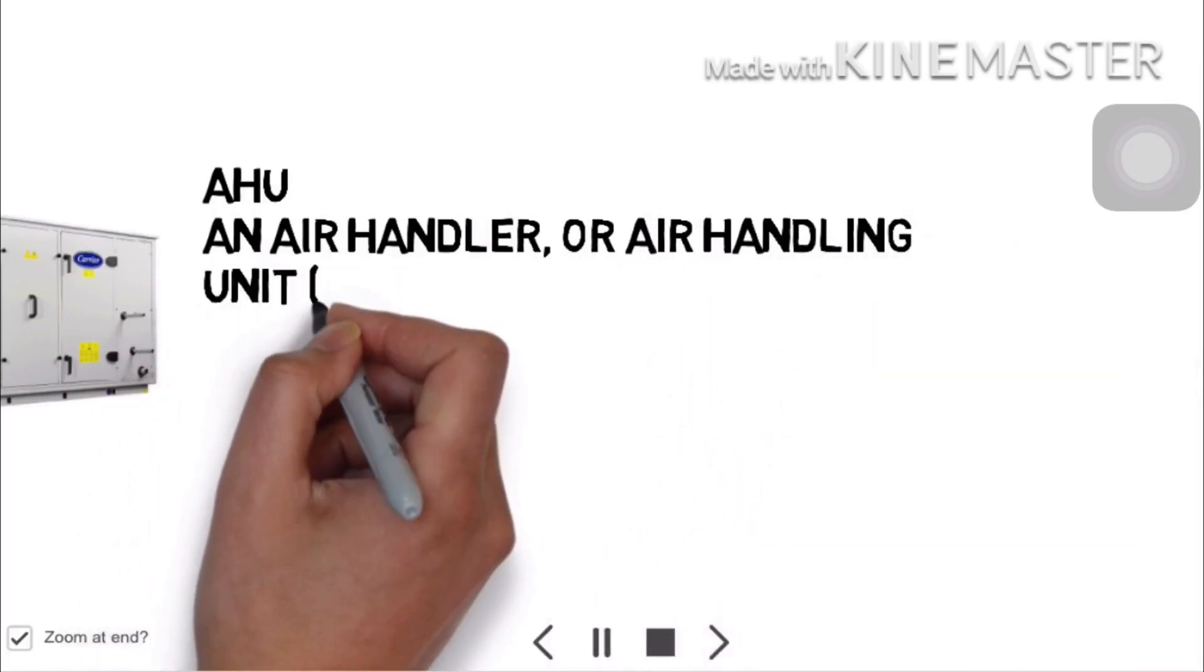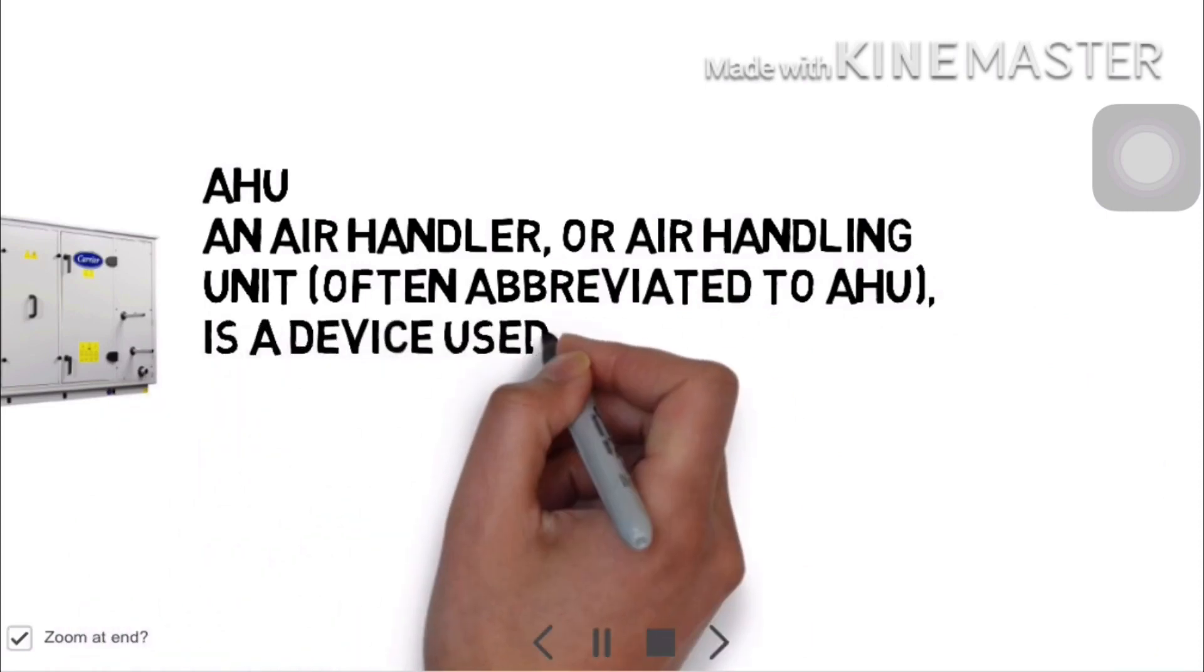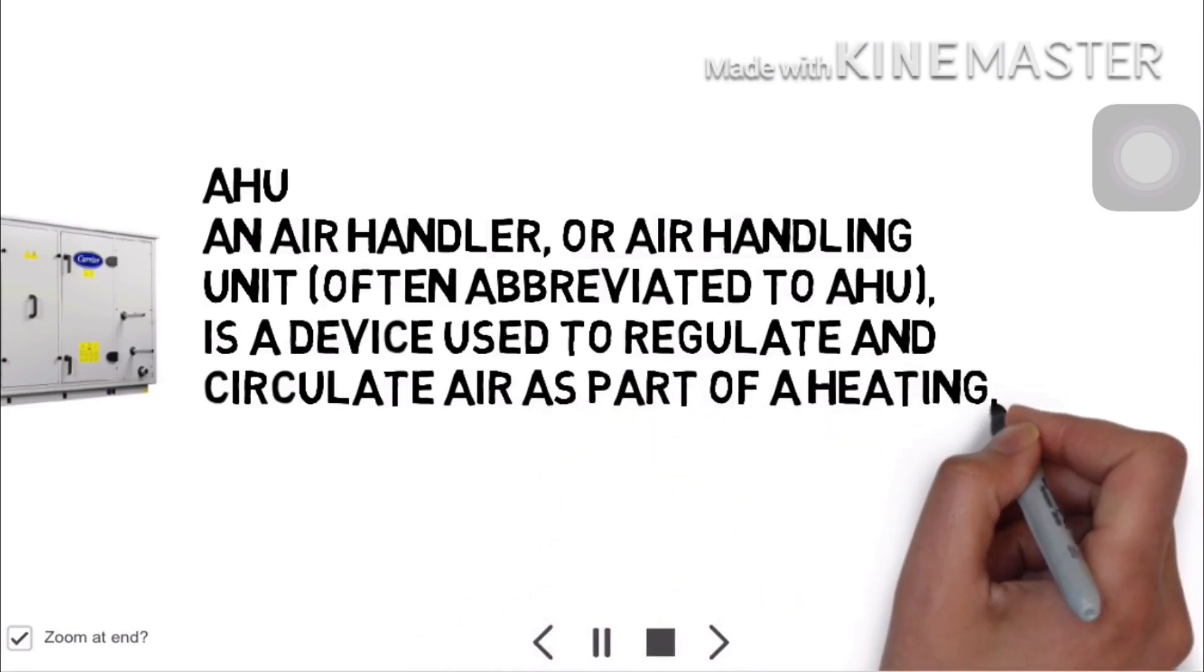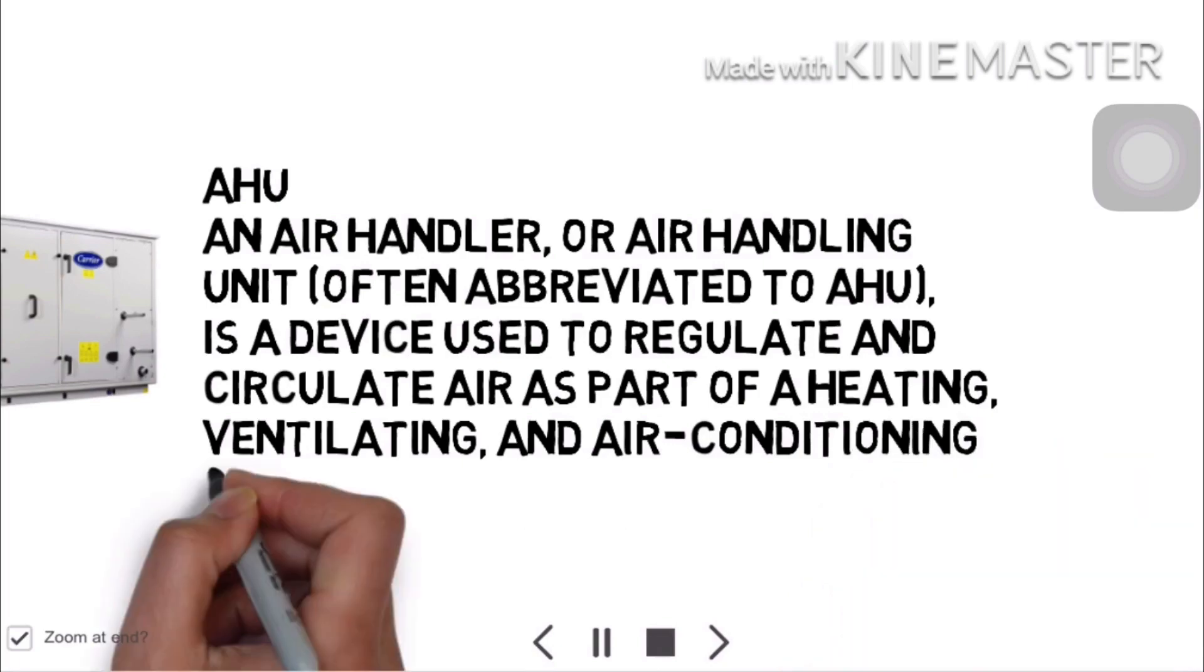AHU, an air handler or air handling unit, often abbreviated to AHU, is a device used to regulate and circulate air as part of a heating, ventilation, and air conditioning system.